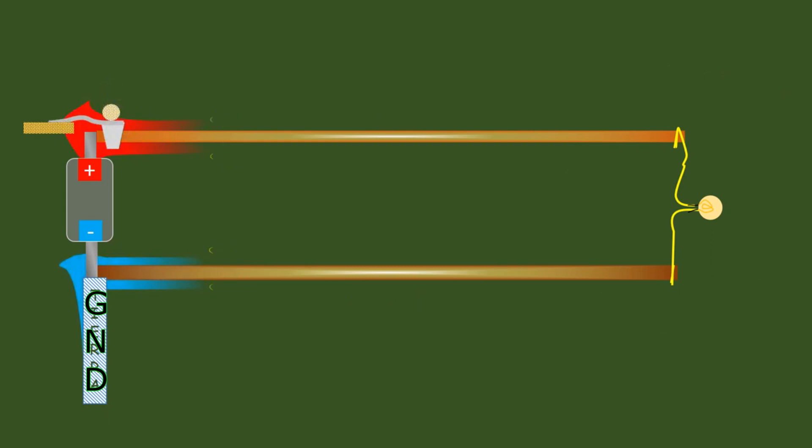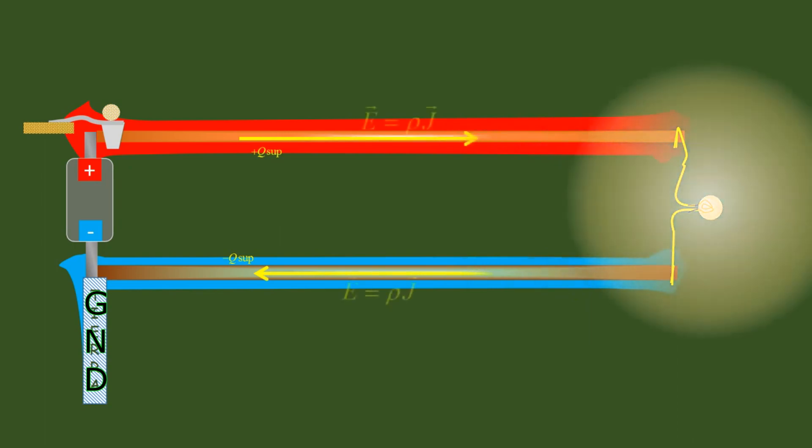Therefore, the energy does not reach the load through an electromagnetic wave. The wave generated in the connection transient propagates through the air that surrounds the circuit, providing the necessary energy to position the surface charges that originate the electric field related to the current density through Ohm's law.